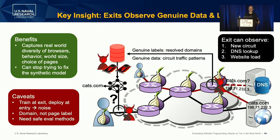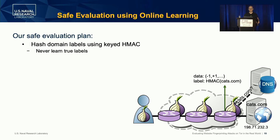We came up with a safe evaluation method. First, we add code to Tor to protect the websites being visited — the domains — using a keyed HMAC. So Tor will HMAC the domain label before sending it out to our scripts. When we receive the website, it's a pseudonym — it's a random number, not the actual domain — so we never learn the true labels. And then we get a sequence of plus ones and minus ones, where plus one means a packet or Tor cell in one direction and minus one means a cell in the other direction. So we're getting directionality and a pseudonym representing a specific web page.